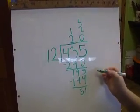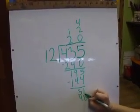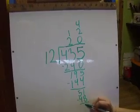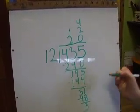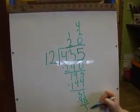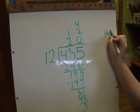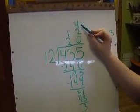4 times 12 is 48. You subtract, get 3. And of course 12 can't go into 3 any more times. So you have a remainder of 3 in your final answer.